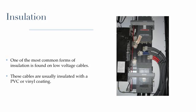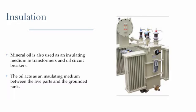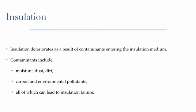One of the most common forms of insulation is found on low voltage cables. These cables are usually insulated with a PVC or vinyl coating. Mineral oil is also used as an insulating medium in transformers and oil circuit breakers. The oil acts as an insulating medium between the live parts and the grounded tank. Insulation deteriorates as a result of contaminants entering the insulation medium. Contaminants include moisture, dust, dirt, carbon, and environmental pollutants, all of which can lead to insulation failure.